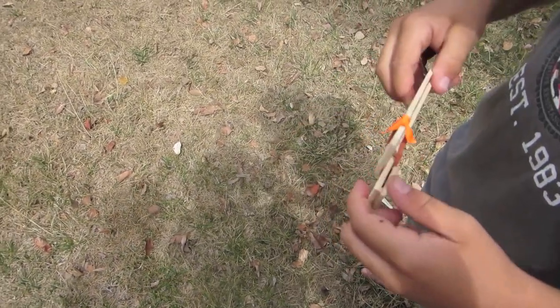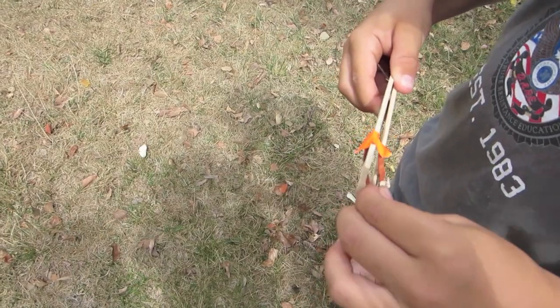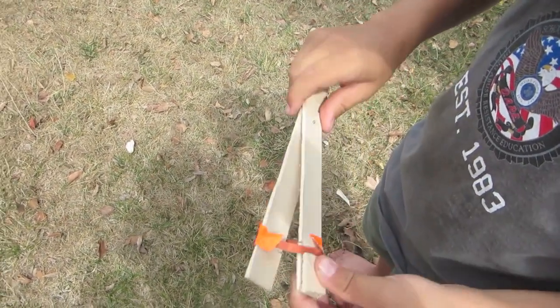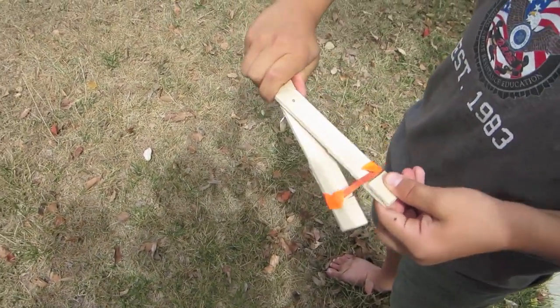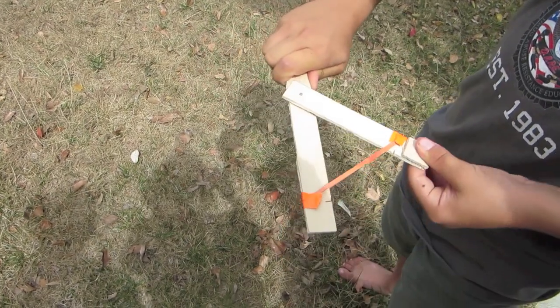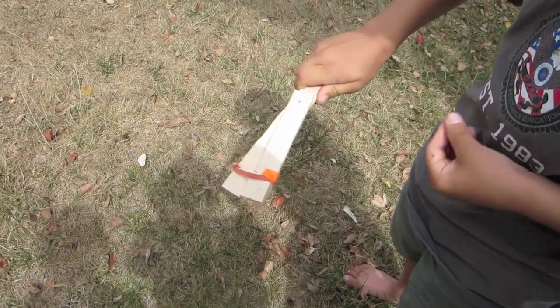So to load the penny, you put it in like this. Tap it so it goes down and shoot it. Hold the barrel actually facing towards you. Then you pull this back and let go and it shoots it.